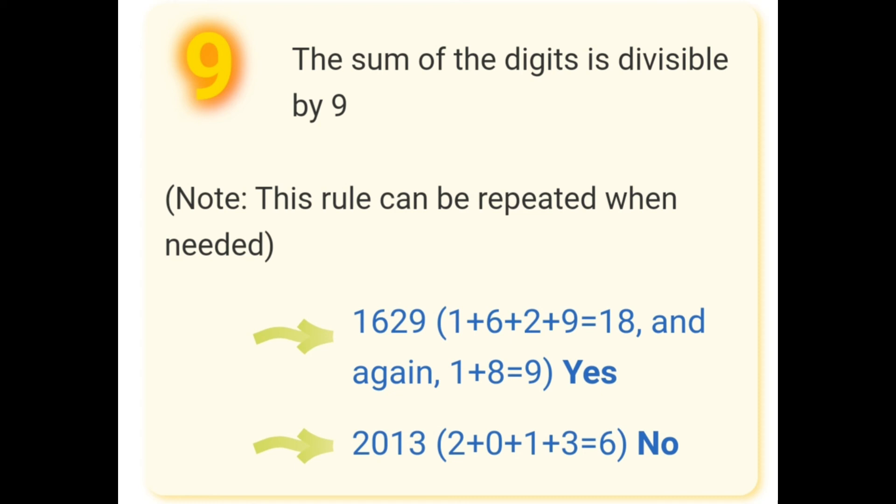2013. When we add all the digits, i.e. 2 plus 0 plus 1 plus 3, we get 6. 6 cannot be divided by 9, therefore 2013 is also not divisible by 9.